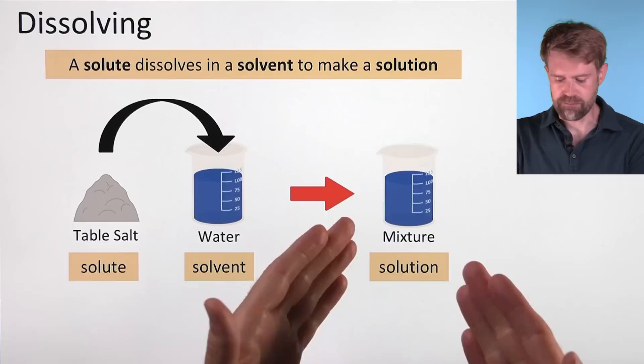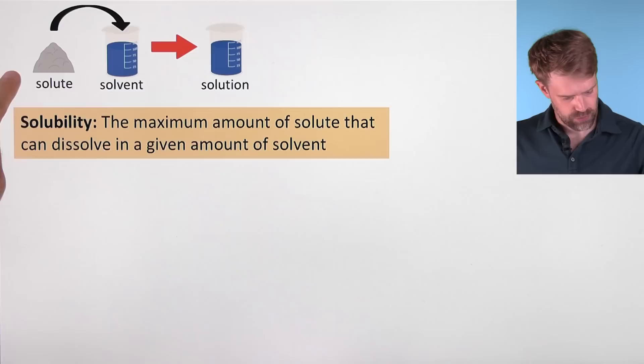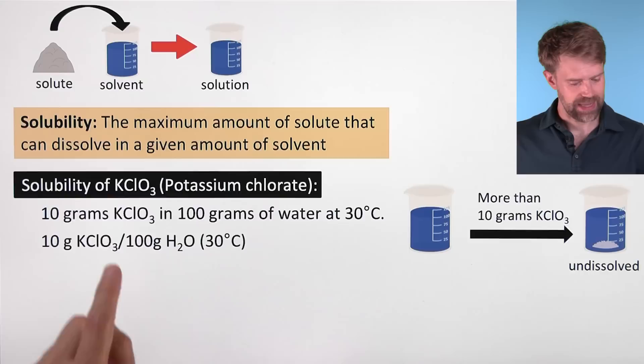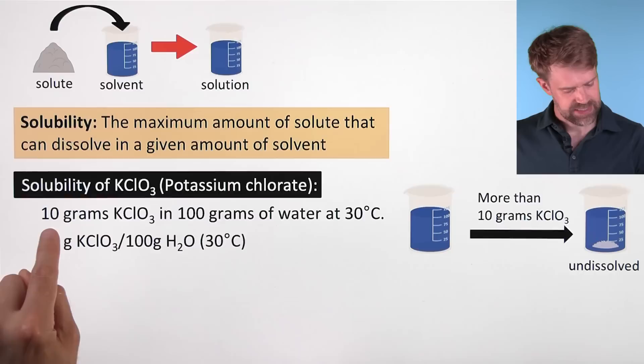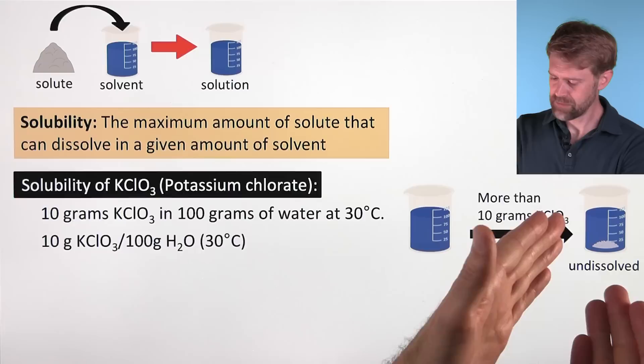A super important concept with dissolving is solubility. Solubility is the maximum amount of solute that can dissolve in a given amount of solvent. For example, we could look at KClO3 (potassium chlorate), and its solubility is 10 grams KClO3 in 100 grams of water at 30 degrees Celsius. So more than 10 grams of potassium chlorate, and it's not going to dissolve.